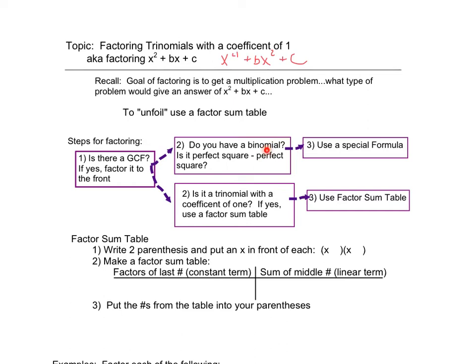Step 2 is going to split into two parts. Do I have a binomial? If yes, I'm going to try to use that special formula. If not, I'm just going to move down and ask, is it a trinomial with a coefficient of 1? If yes, I'll use a factor sum table.